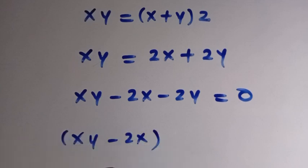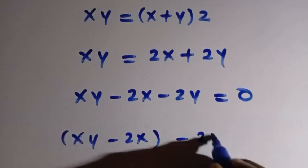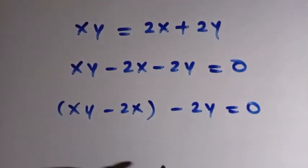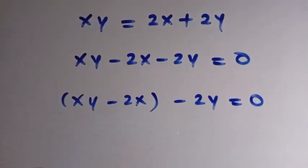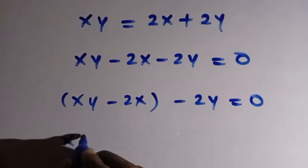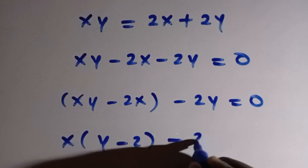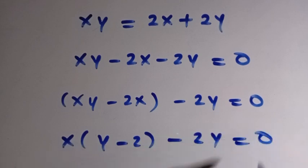So we put this in brackets. We have x into brackets, also we have this as minus 2y equals 0. So what is common here is x. By factoring out x, we have x into bracket of y minus 2, minus 2y equals 0.